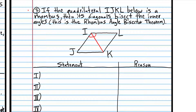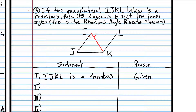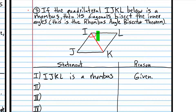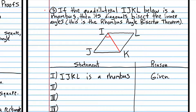We know that IJKL is a rhombus. Let me give you an overview of what we're going to do: we're going to show that this triangle is congruent to this triangle, and then corresponding parts of congruent triangles are congruent — and that's pretty much it. This problem can be a little confusing because you have isosceles triangles, so it's difficult to see what parts are corresponding because there's more than one way to do it.